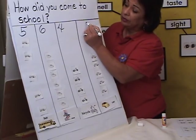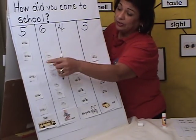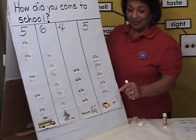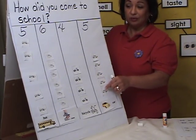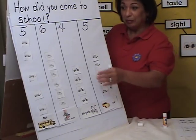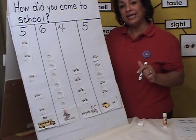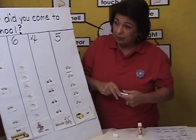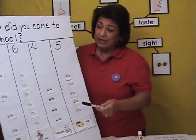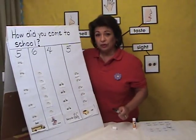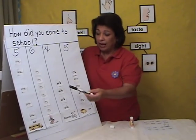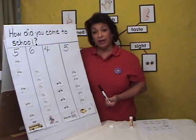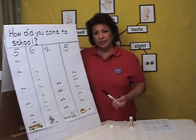Now look at the difference between this one and this one — see what the students will see. Here they probably thought that this was less because it was shorter, but it's the same amount. You can take it even further because you can compare: how many more? Let's compare these two. You can take it at a higher level: how many more students walked than rode their bicycles? There are so many questions you can do.